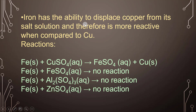Iron has the ability to displace copper from its salt solution, so iron is more reactive than copper. However, iron cannot displace from ferrous sulfate — no such reaction occurs with ferrous sulfate.